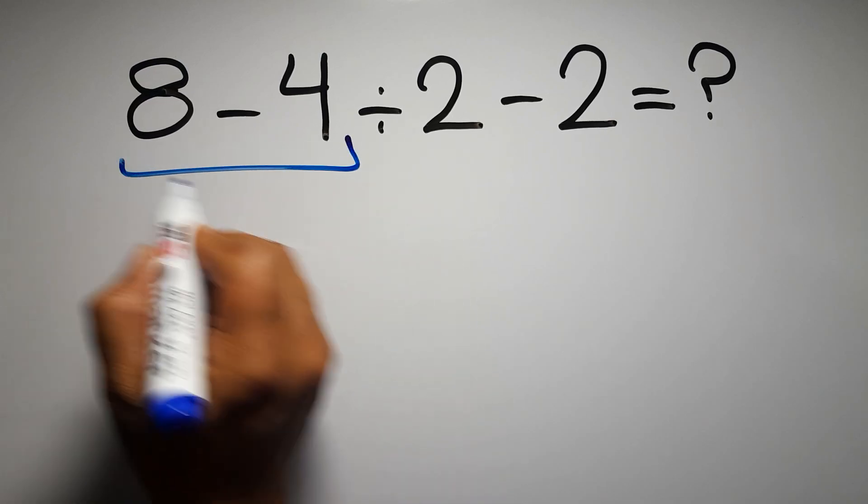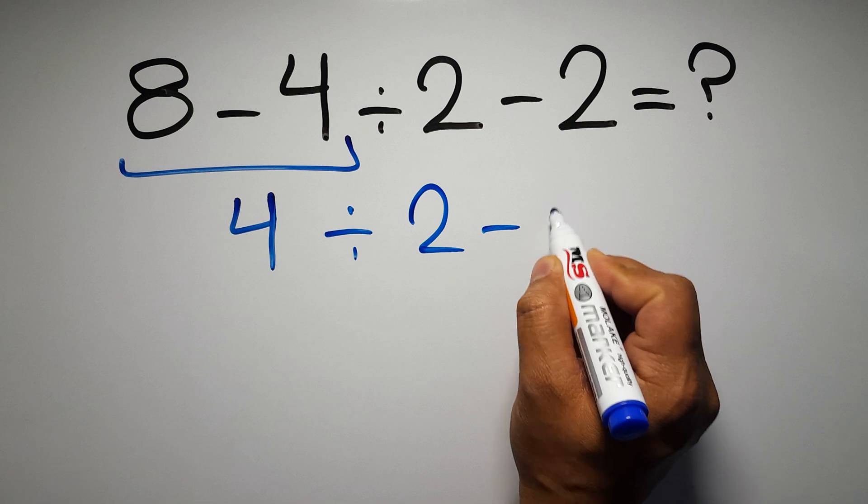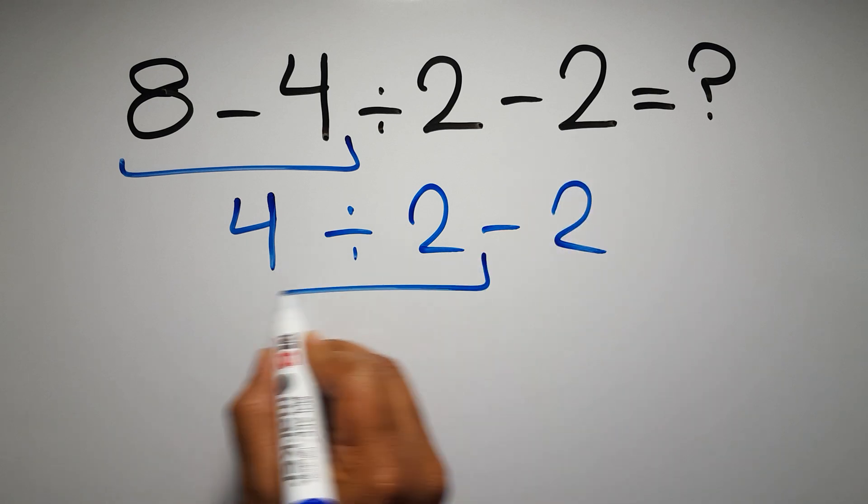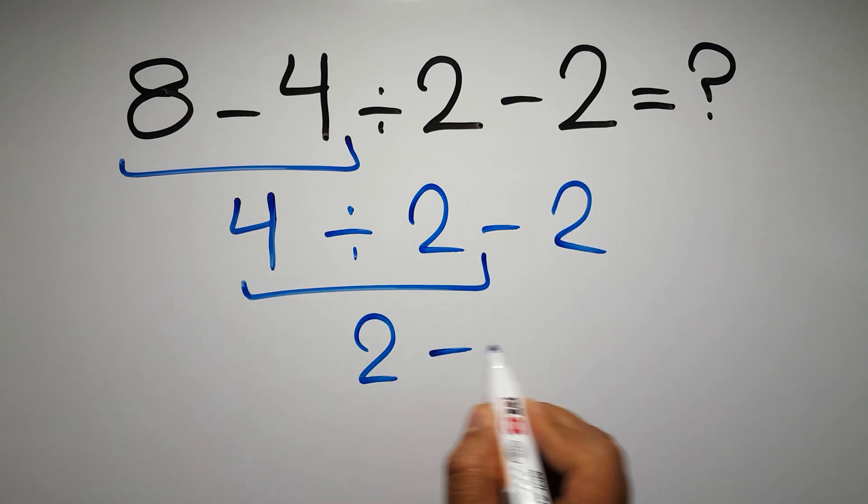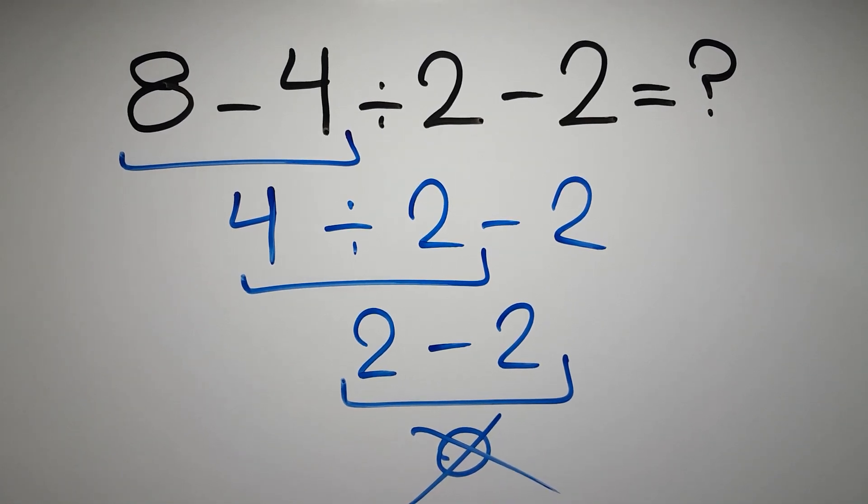Minus 4 gives us 4, so 4 divided by 2 minus 2. 4 divided by 2 gives us 2, and 2 minus 2 is just 0. But this answer is not correct because according to the order of operations, first...